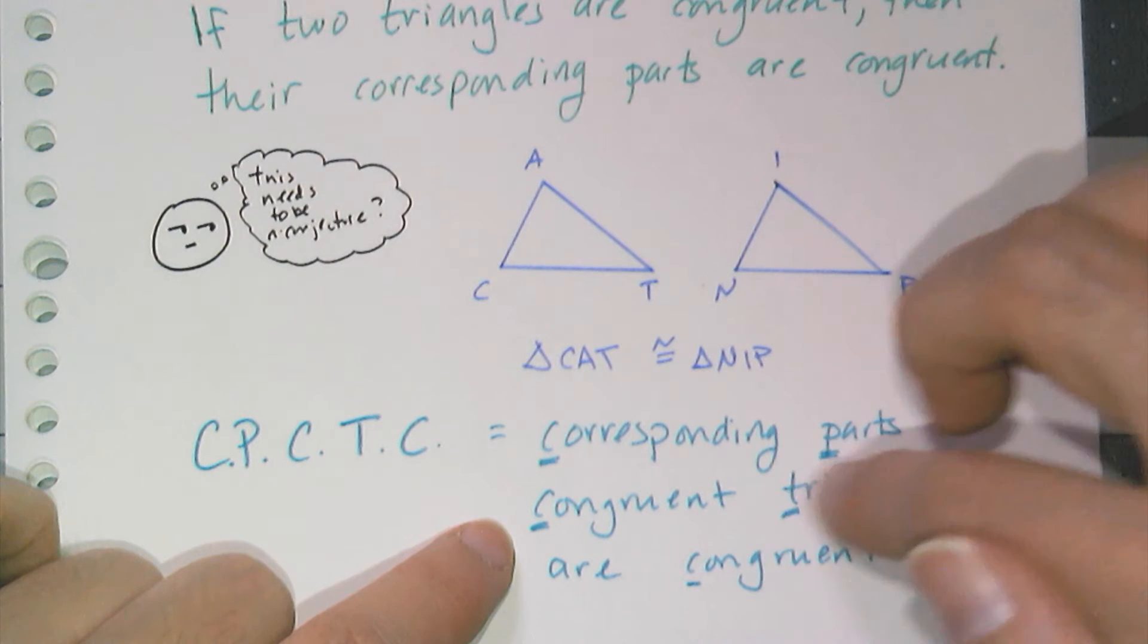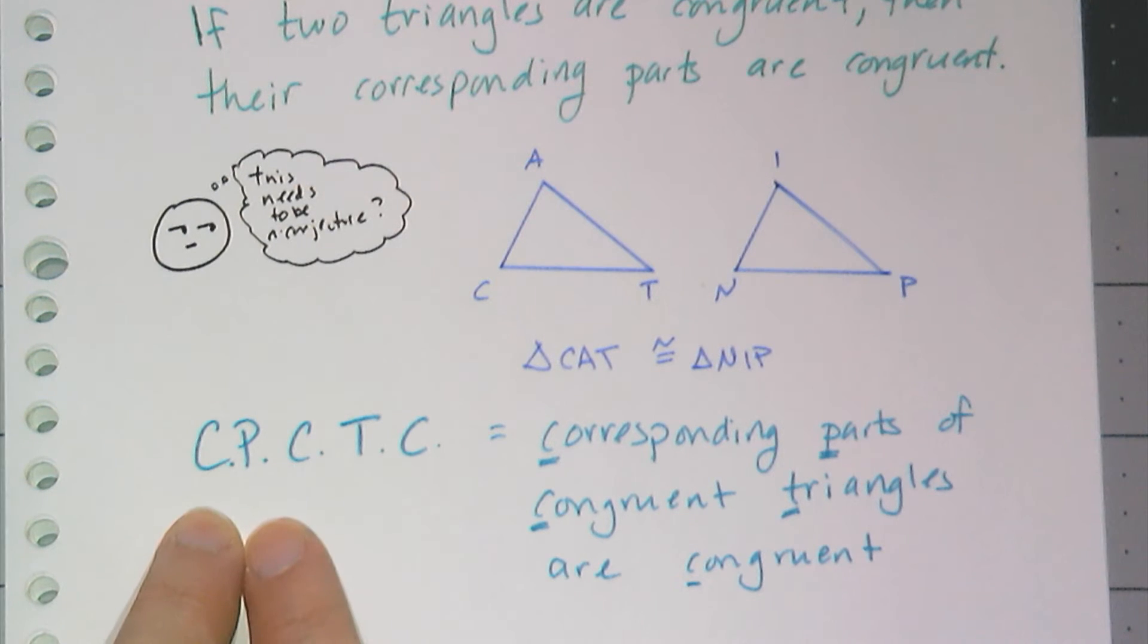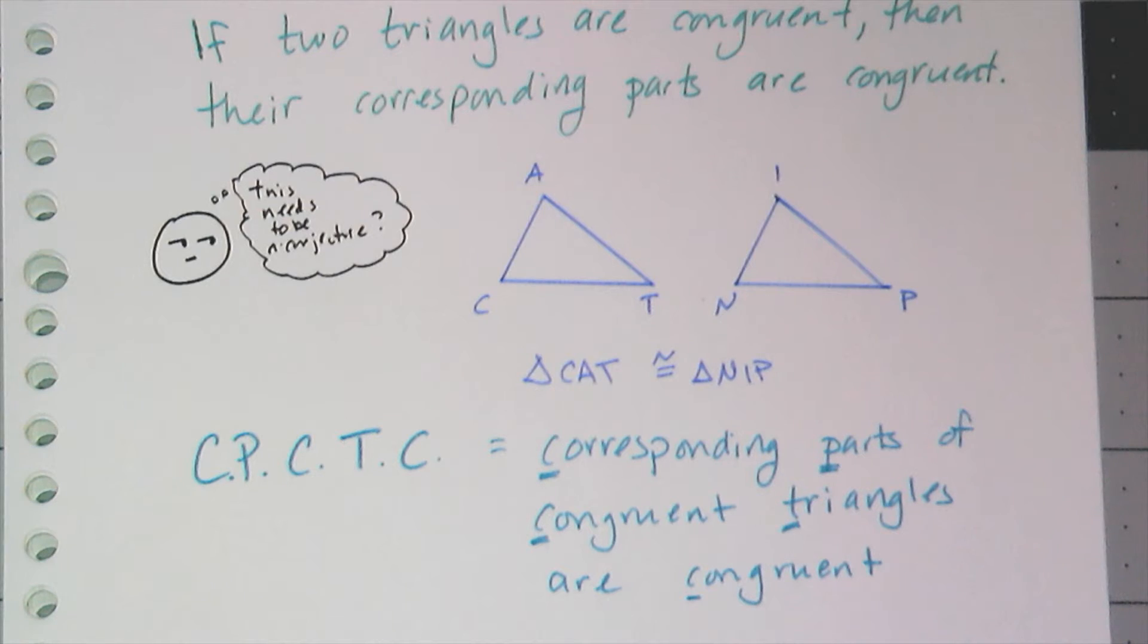And it happens so often that you have to use this in proof that we're going to have an abbreviation for it. Corresponding parts of congruent triangles are congruent is something you have to write so often that instead of writing this all out, you're just going to write CPCTC. So let's look at two examples where this is going to show up.